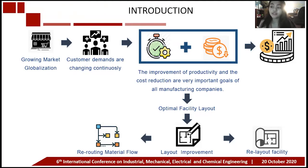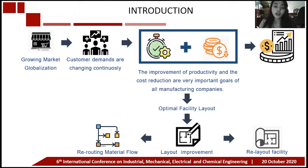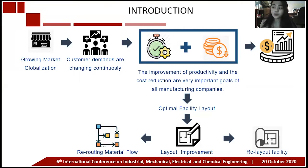Facility layout design involves a systematic physical arrangement of different departments, workstations, machines, equipment, storage areas, and common areas in a manufacturing company. There are two methods for layout improvement. The first one is re-routing material flow in a given facility, which can improve the efficiency of material movement. But when re-routing is not efficient enough, the other way is the re-layout of the facility.